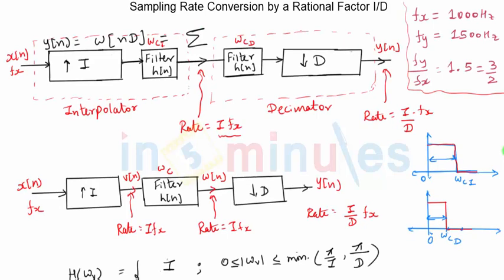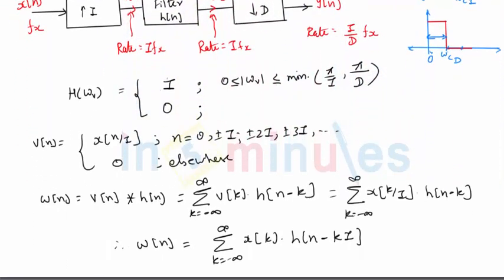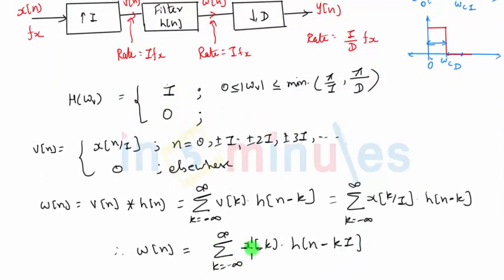Output of the decimator block, which is Y of n, W is input to the decimator block, so it can simply be written as W of n D, where D denotes the decimation. So if I use the expression for W that we have derived in the previous expression, this is the expression for W, it's a summation X of k, H of n minus k i.